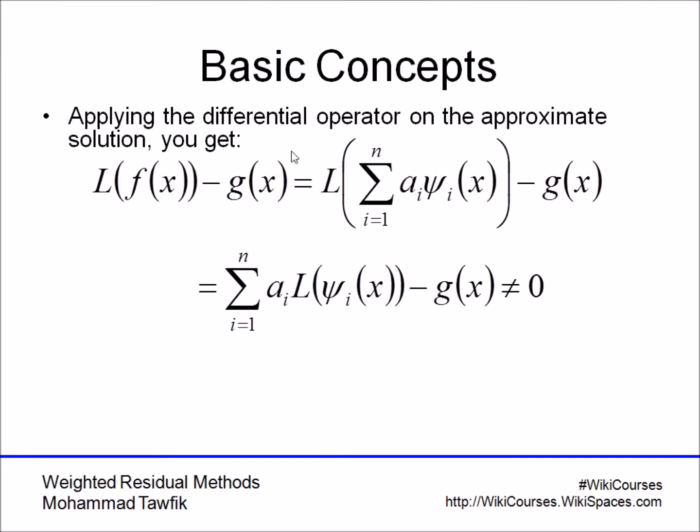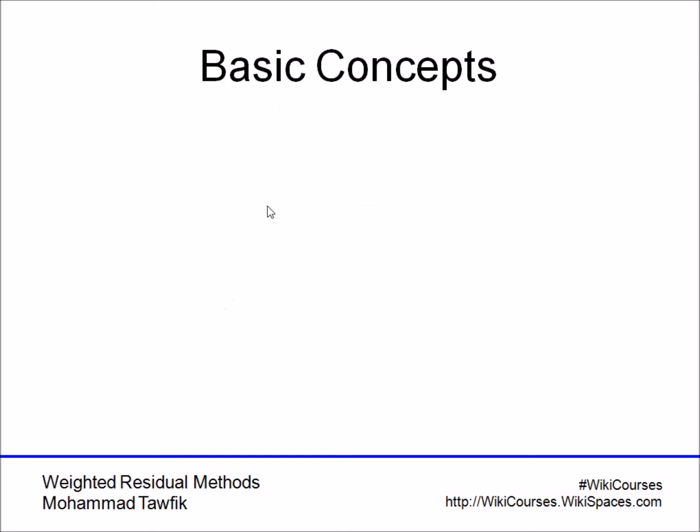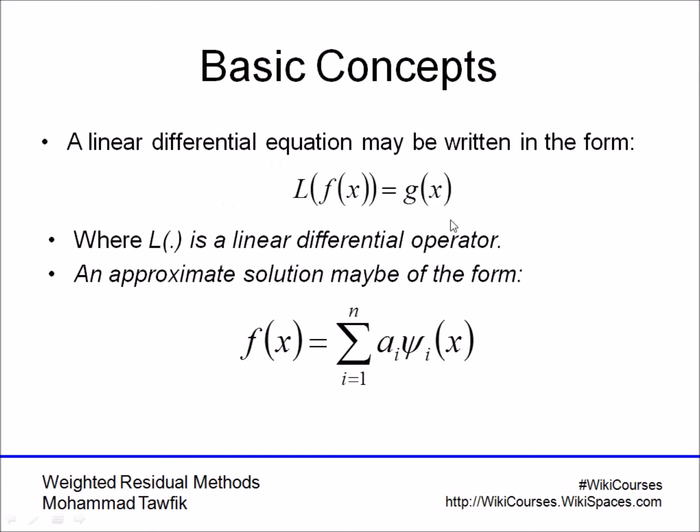That is, f(x), the true f(x), when acted upon by the linear operator, then subtracted from g(x), it should result in zero. This is what we've seen here. By moving g(x) to the left hand side, the right hand side should be equal to zero.